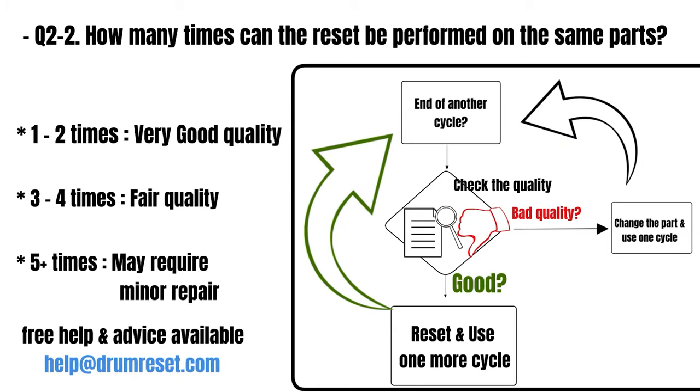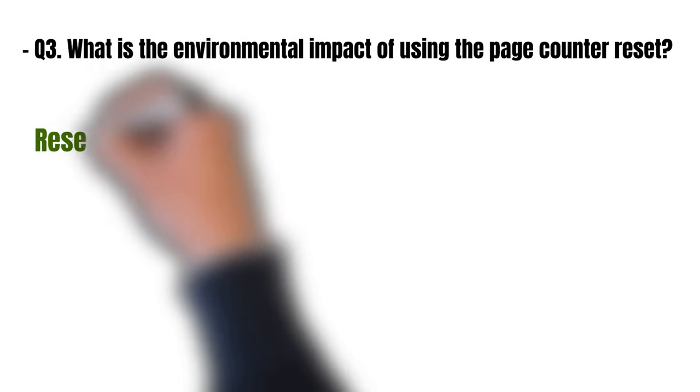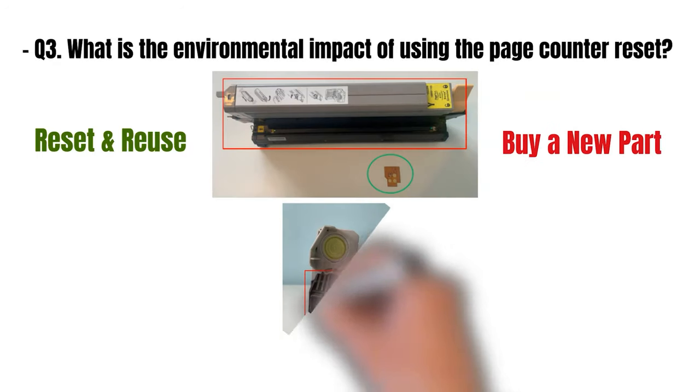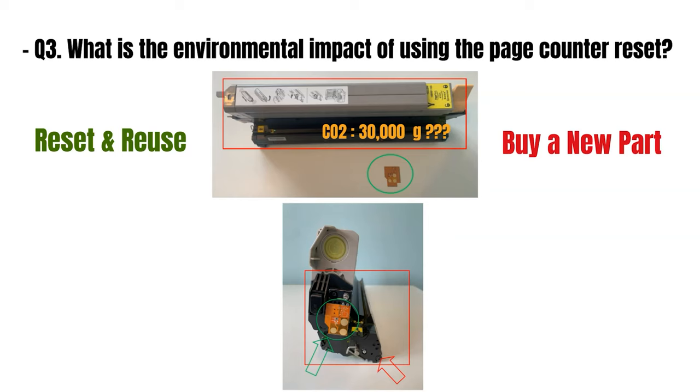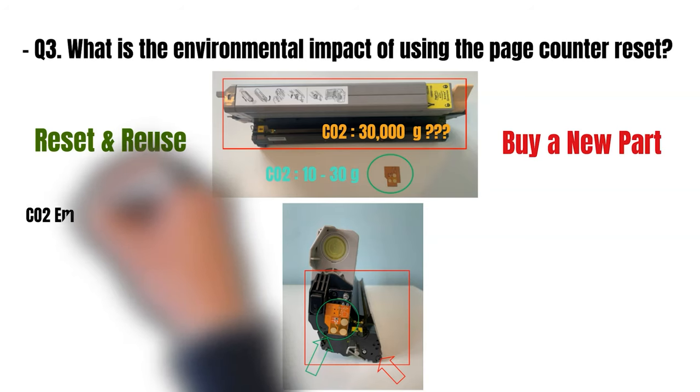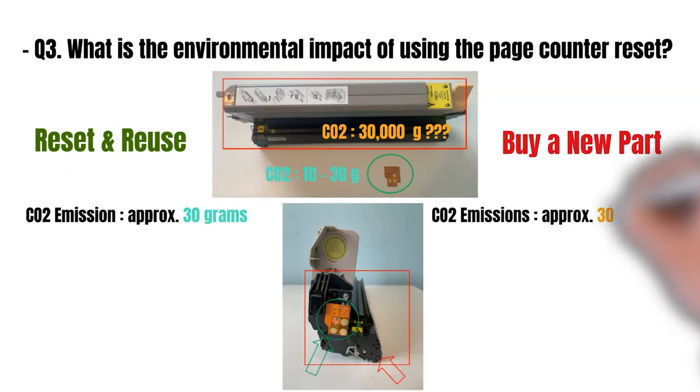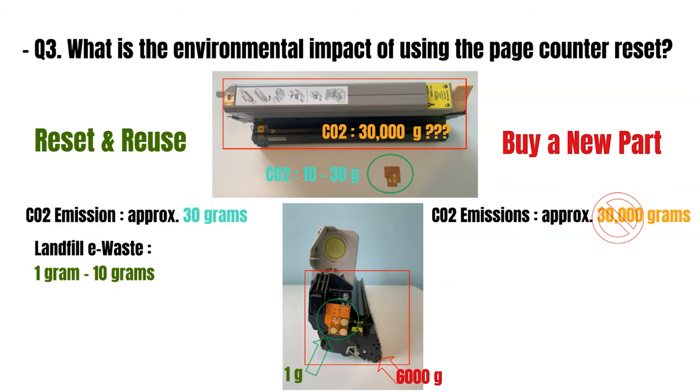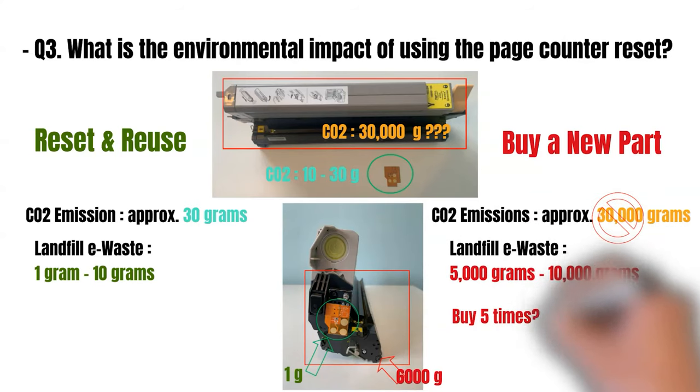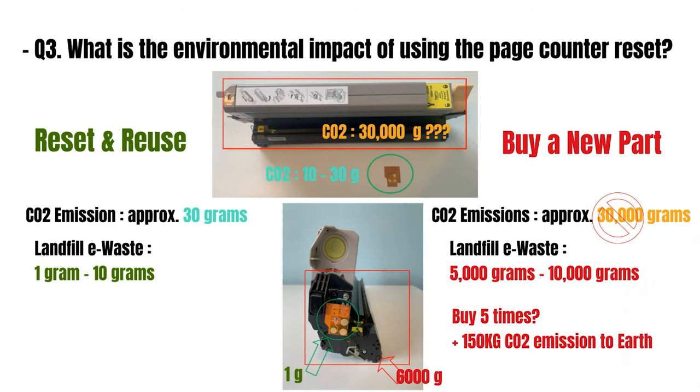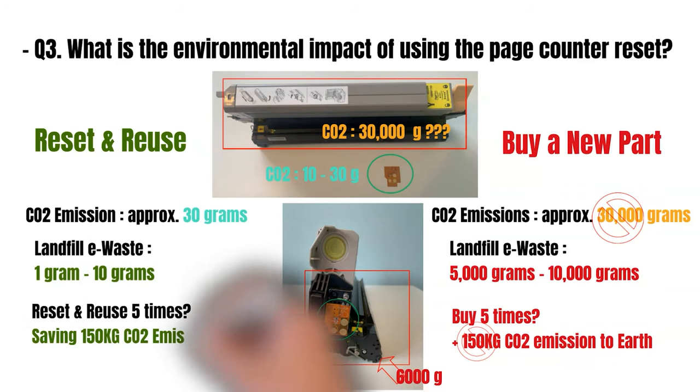Lastly, what is the environmental impact of resetting and reusing the parts? Manufacturing each maintenance part would generate an additional 30 kilograms of CO2 emissions for our planet. Our reset kit significantly reduced this impact to just 30 grams, rather than 30 kilograms. Furthermore, the majority of used maintenance parts ultimately end up in landfills, adding an environmental burden of approximately 5 to 10 kilograms each. By resetting and reusing drum, belt, and fuser units a total of five times in any combination, you will contribute to saving the planet by avoiding 150 kilograms of CO2 emissions and reducing landfill waste by 30 to 50 kilograms or more.